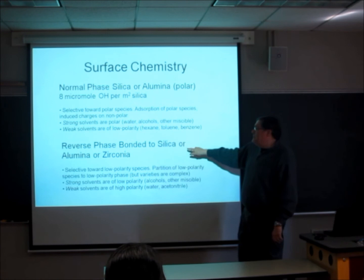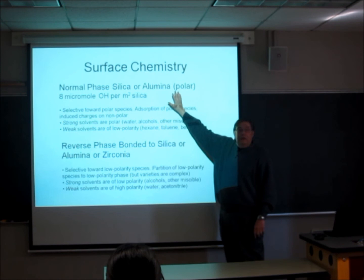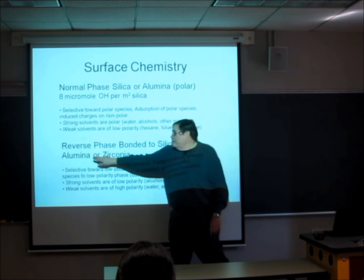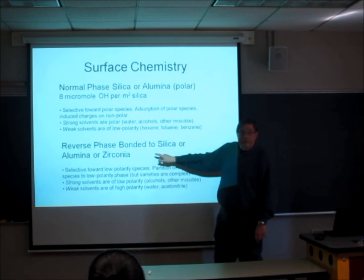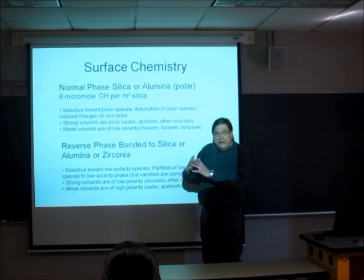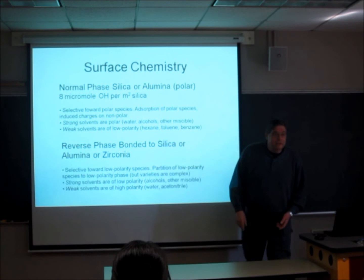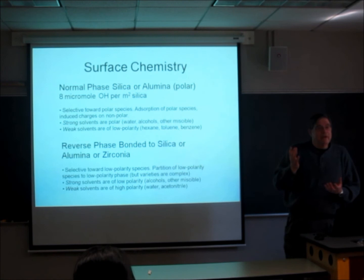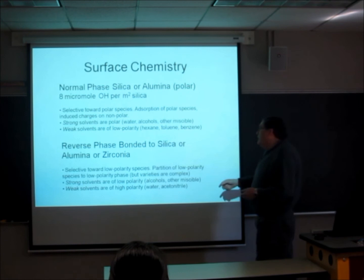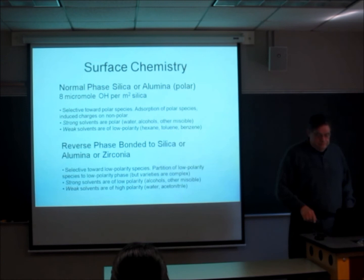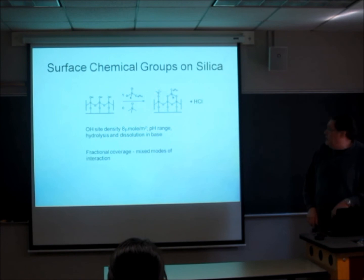What we're going to do is reverse that thing by chemically bonding an organic phase to the silica. This is bare silica or alumina. And here we can bond the phase to silica or alumina or zirconia. Mostly silica and a little bit of zirconium oxide, which incidentally was a discovery of Professor Carr and his group here. This is a major deal. These things now have organic phases. They're oily. They select low polarity solutes. Low polarity solutes will come up and what we call partition to them, like oil partitions to an oily phase. The strong solvents now are the opposite of strong solvents up here. They're of low polarity. And the weak solvents are of high polarity.